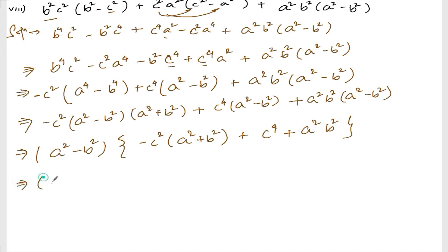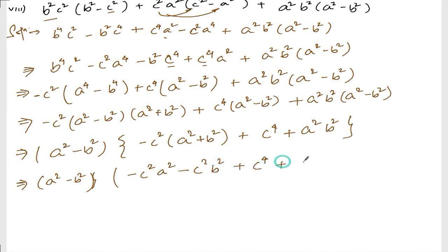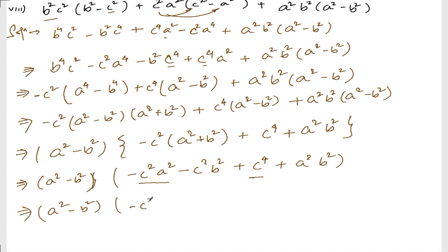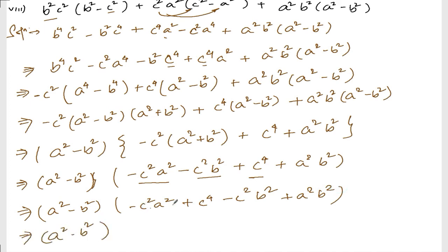Now we take a squared minus b squared as common factor. Inside we have: minus c squared into a squared plus b squared, plus c to the power 4, plus a squared b squared. Expanding: minus c squared a squared minus c squared b squared plus c to the power 4 plus a squared b squared. Then we write a squared minus b squared outside.